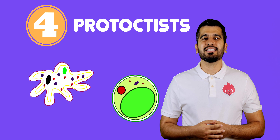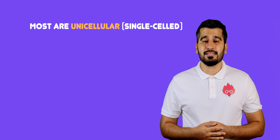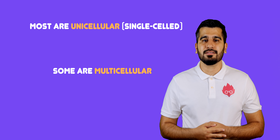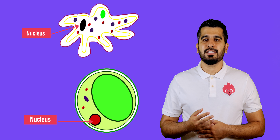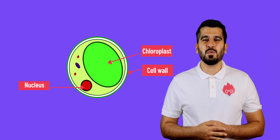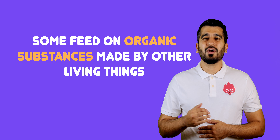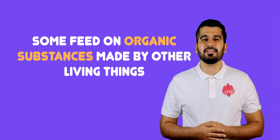Our final eukaryotic organism is protoctists. Most protoctists are unicellular, meaning they are single-celled, but some are multicellular. All of them will have a nucleus as part of their cell structure. However, some may have cell walls and chloroplasts. Some therefore photosynthesize, and some that cannot photosynthesize feed on organic substances made from other living things.